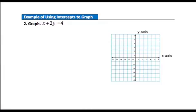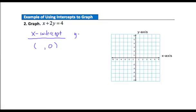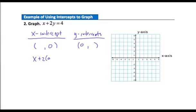Example 2. We're asked to graph the equation x plus 2y equals 4. We're going to find the intercepts. The x-intercept occurs when the y-value is 0, and the y-intercept occurs when our x-value is 0. Let's find the x-intercept first. Plugging 0 in for y, I'd have x plus 2 times 0 equals 4. The 2 times 0 drops right out, so x has to equal 4.